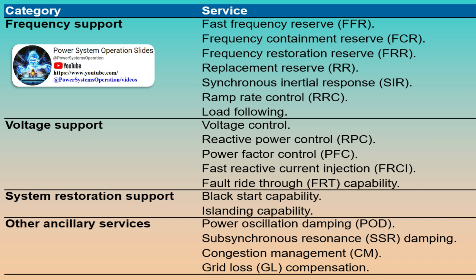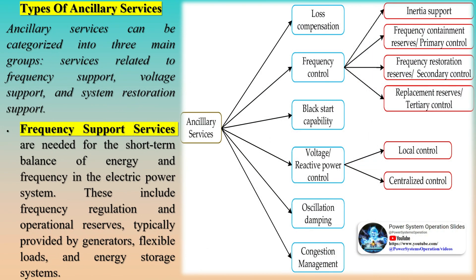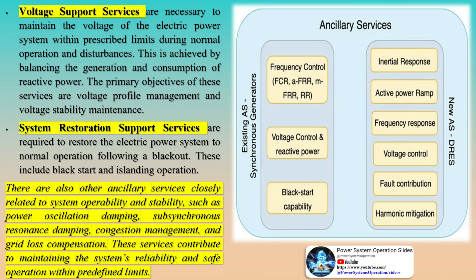Contemporary electric power systems encounter numerous challenges concerning the reliability, security, and quality of the electric power supply. Ancillary services are necessary to address these challenges. Key technical challenges are associated with system stability, including frequency, voltage, and rotor angle stability. The stability of an electric power system refers to the system's capability, given an initial operating condition, to restore a state of operating equilibrium after experiencing a physical disturbance, with most system variables constrained such that the system remains largely intact. System disturbances can take various forms, such as sudden load changes, abrupt short circuits, line-to-line faults, all three-line faults, and switching.